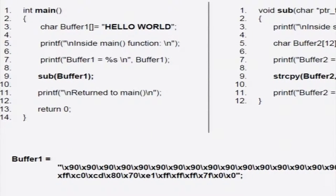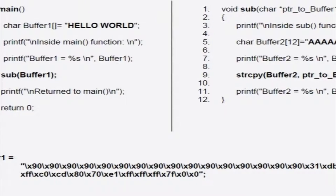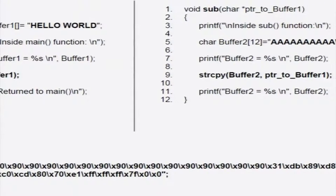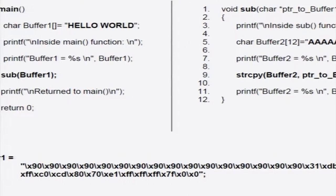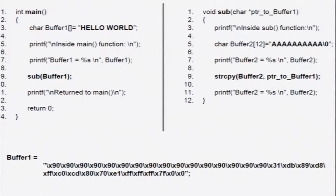This is our first program. The second program is almost similar to the first program, with the only difference that we will initialize buffer 1 with a long hex code which you can see at the bottom. I will explain what it means in some time. For now, just consider this long hex code as being initialized to buffer 1. To summarize, what this program does is it will pass a buffer to a subroutine, the contents of that buffer will be copied into another buffer, and the program terminates.